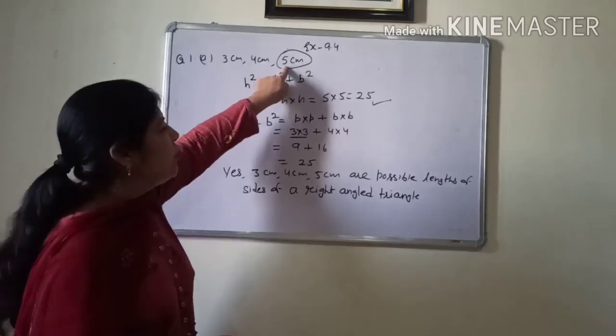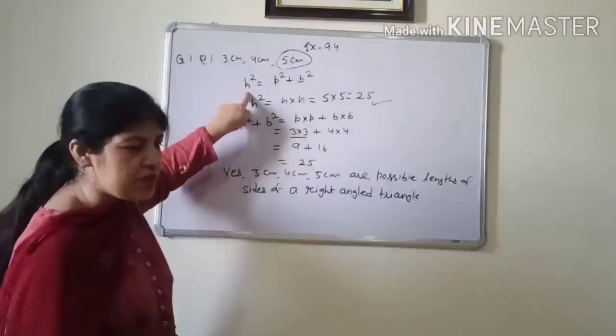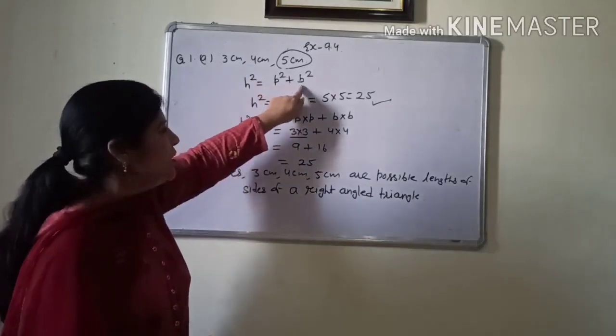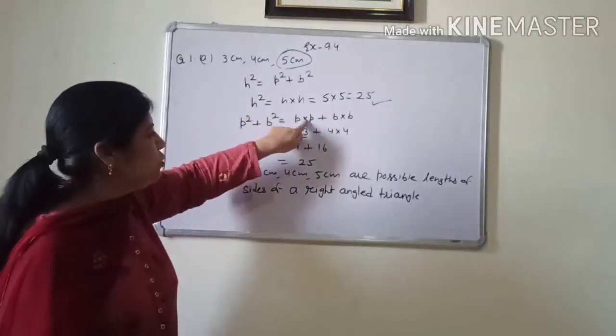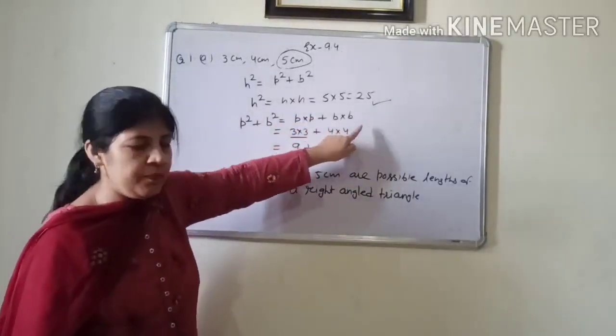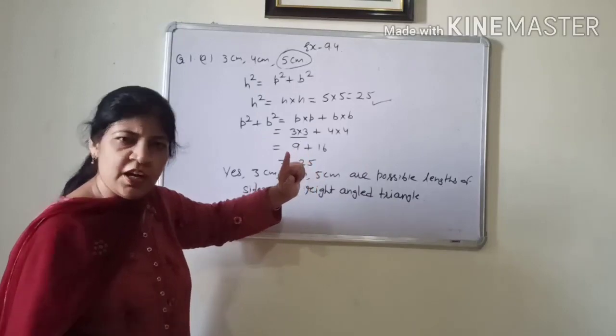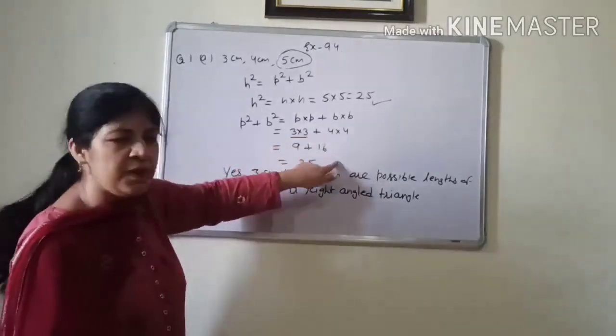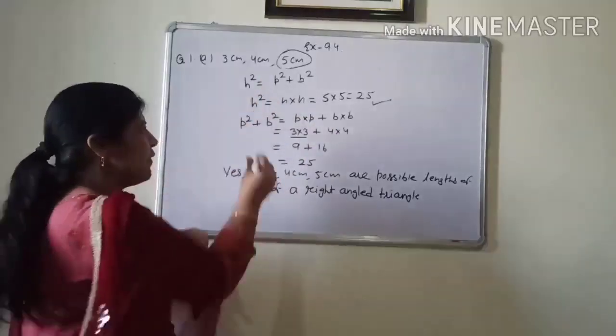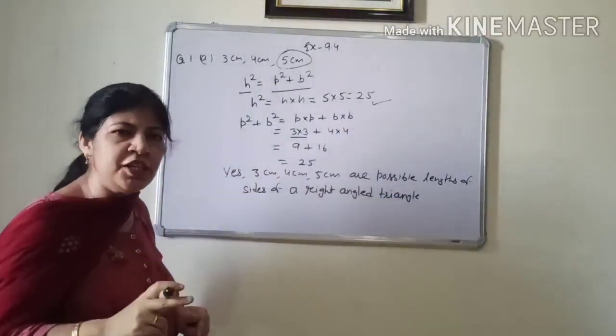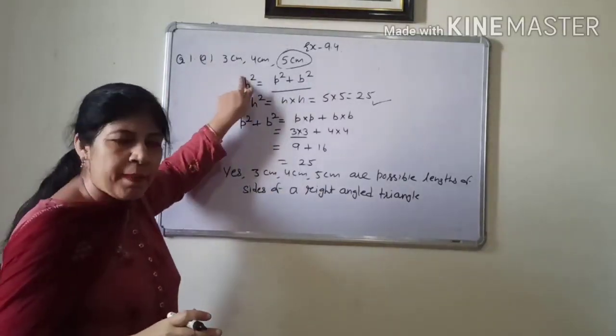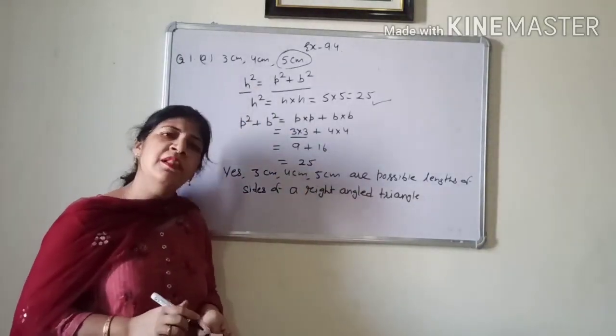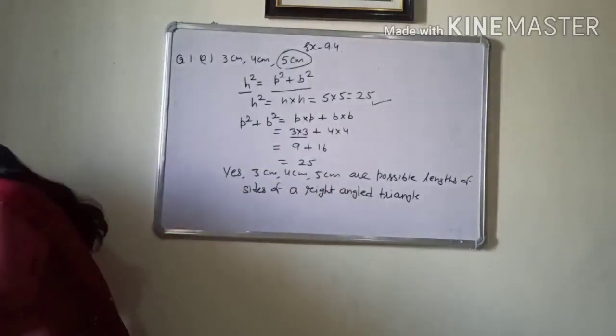So, first, you will consider the greatest side as hypotenuse. Take its square. 5 multiplied by 5, 25. Now, we will take right hand side. p square means p into p plus b square means b into b. So, you can take any side, other two sides. One is base and one is perpendicular. So, 3 into 3 plus 4 into 4. 9 plus 16, you will get 25. It means the left hand side is equal to right hand side. Means it satisfies the Pythagoras theorem. So, that's why these are the possible sides of a right angle triangle.